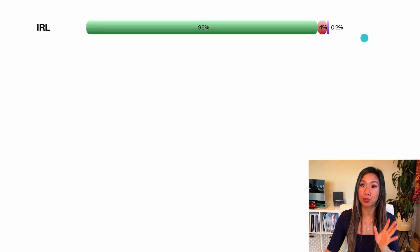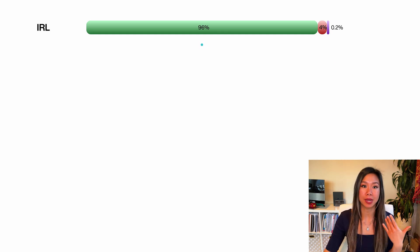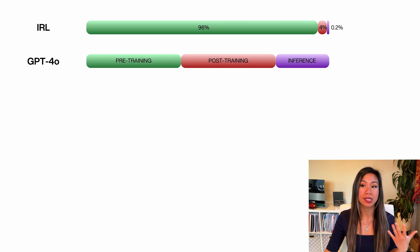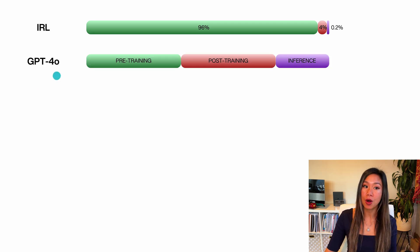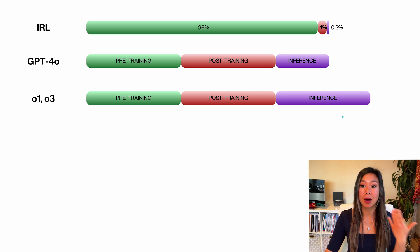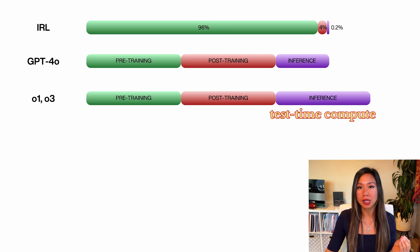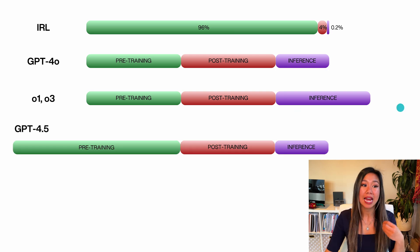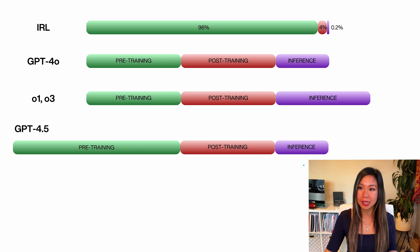In practice, the three stages of an LLM have this approximate distribution, with 96% of the compute spent in pre-training. GPT 4.0, our previous general model, serves as our baseline illustration. When reasoning models like O1 and O3 came about, inference time gets longer because the models are spending more time thinking and reasoning before giving you the answer — a new concept called test-time compute. With GPT 4.5, we don't extend inference time with reasoning capabilities; instead, we give pre-training a bunch more compute.